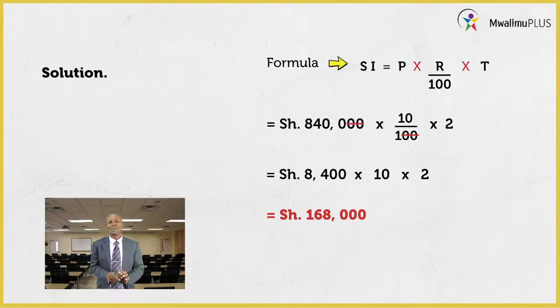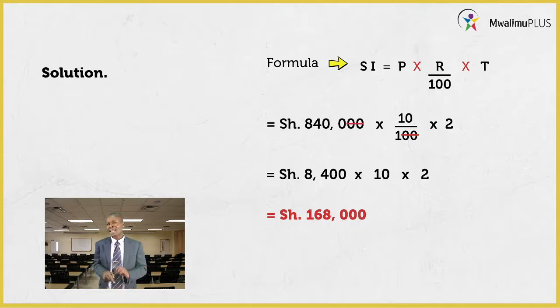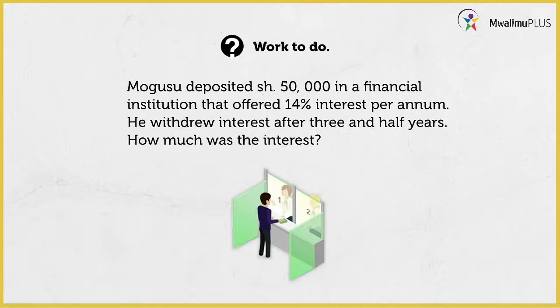Using the formula and understanding what simple interest is, along with its terms, is very important. I want to leave you this question for your trials: Mogusu deposited 50,000 shillings in a financial institution that offered 14% interest. He earned interest after three and a half years. How much interest was this? Work that out, and when we meet in the next lesson, you'll see how it was supposed to be done. Bye-bye.